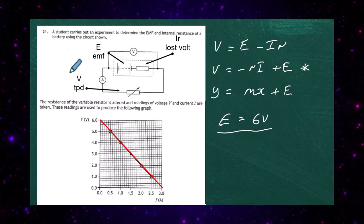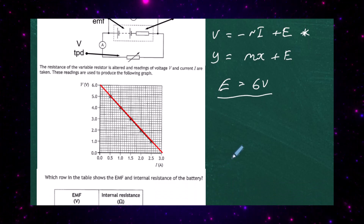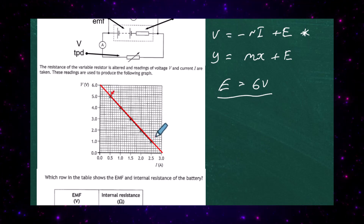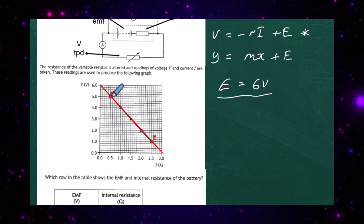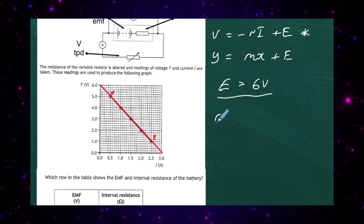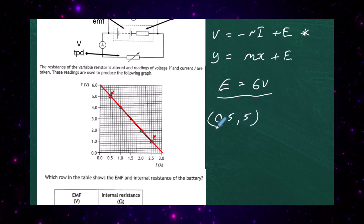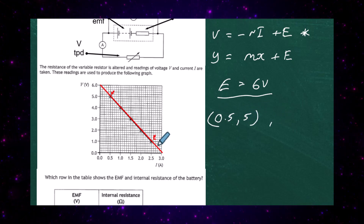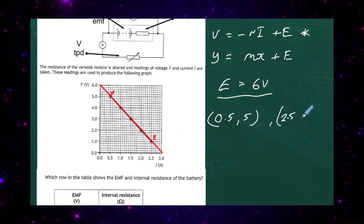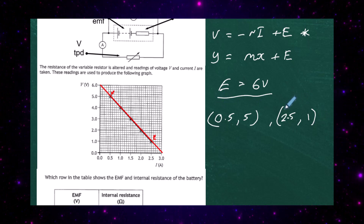Now to work out the gradient of the graph, which gives us the negative of the internal resistance. I'm going to choose two points: the first point is at 0.5 on the x-axis and 5 on the y-axis, and the second point is at 2.5 along and 1 up. So we have coordinates (0.5, 5) and (2.5, 1).